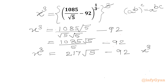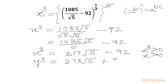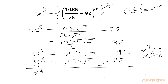Now x cubed is greater than 0, so x is also greater than 0. Let us define y cubed as the conjugate of x cubed: 217 root 5 plus 92. Now I will subtract the second equation from the first one. So x cubed minus y cubed equals negative 92 minus 92, which is negative 184. Let us call this equation number 1.